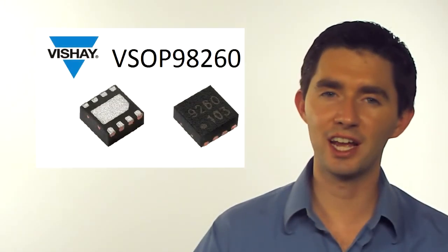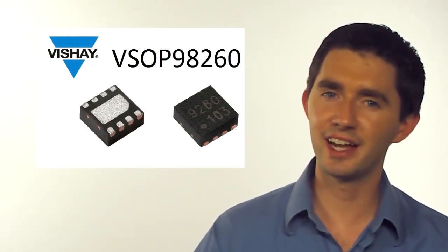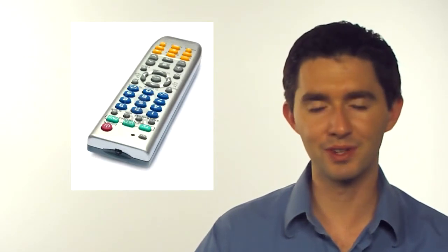Up first is the Vishay VSOP-98260. You know that universal remote you have that you bought for $5 from the grocery store or from your convenience store? Well, all of those have IR sensors in them. Really they have IR LEDs, which work as detectors, and behind that they have a bunch of circuitry. But now, you don't need any of that.